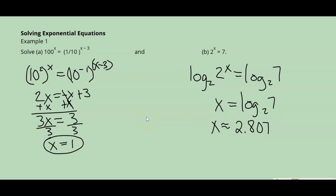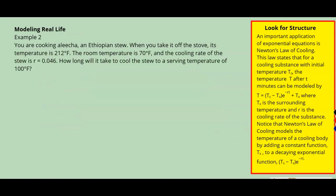Using properties of logarithms will help you solve exponential equations when they do not have the same base. Example 2: Modeling real life. You are cooking alicha, an Ethiopian stew. When you take it off the stove, its temperature is 212 degrees Fahrenheit. The room temperature is 70 degrees, and the cooling rate of the stew is R equals 0.046. How long will it take to cool the stew to a serving temperature of 100 degrees Fahrenheit?